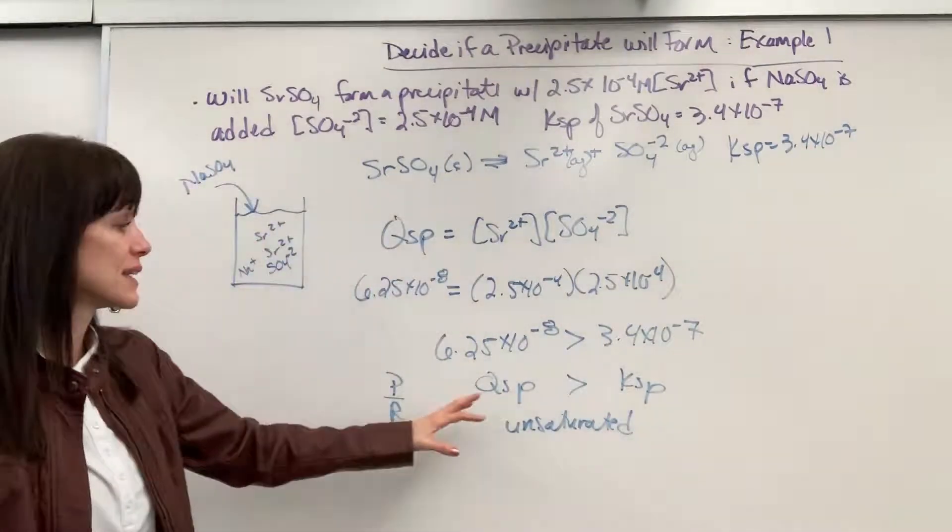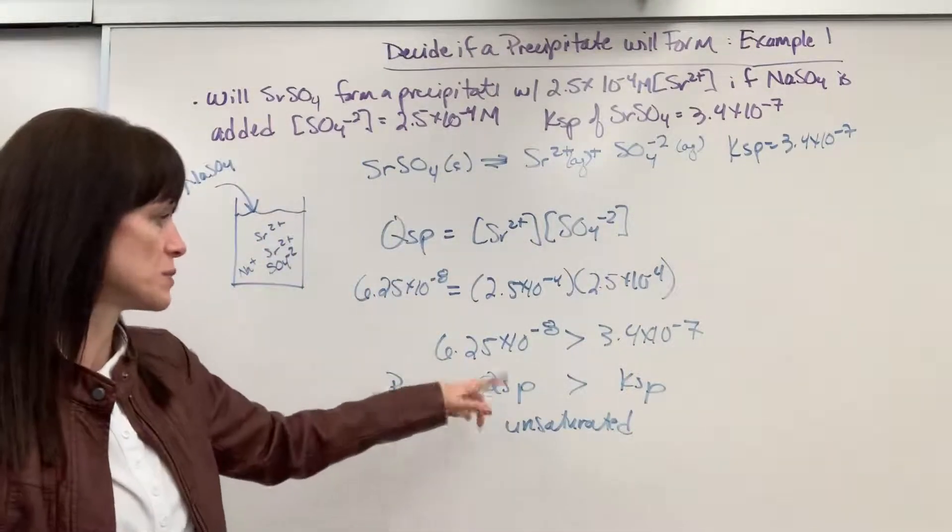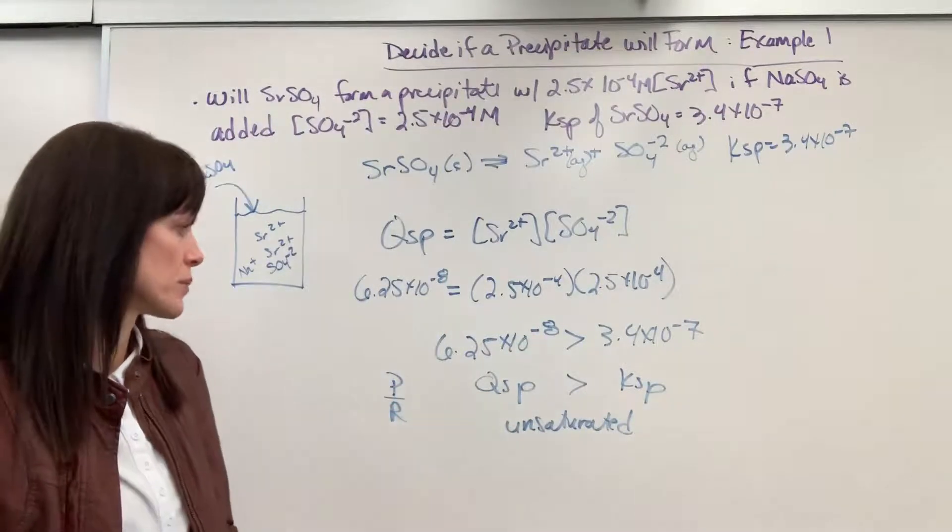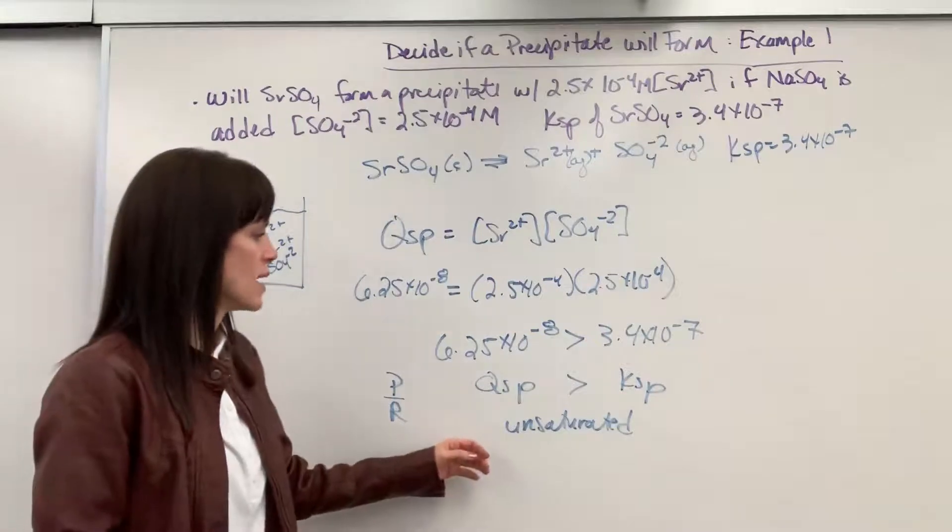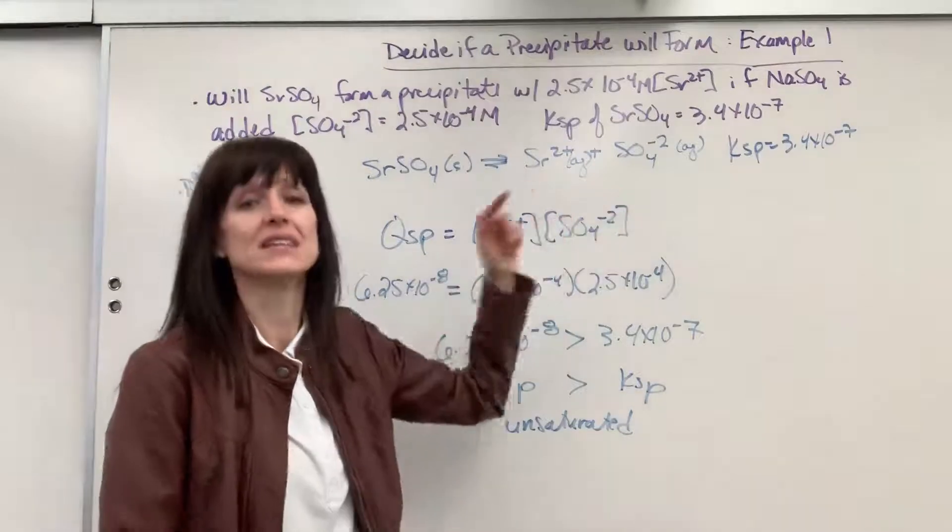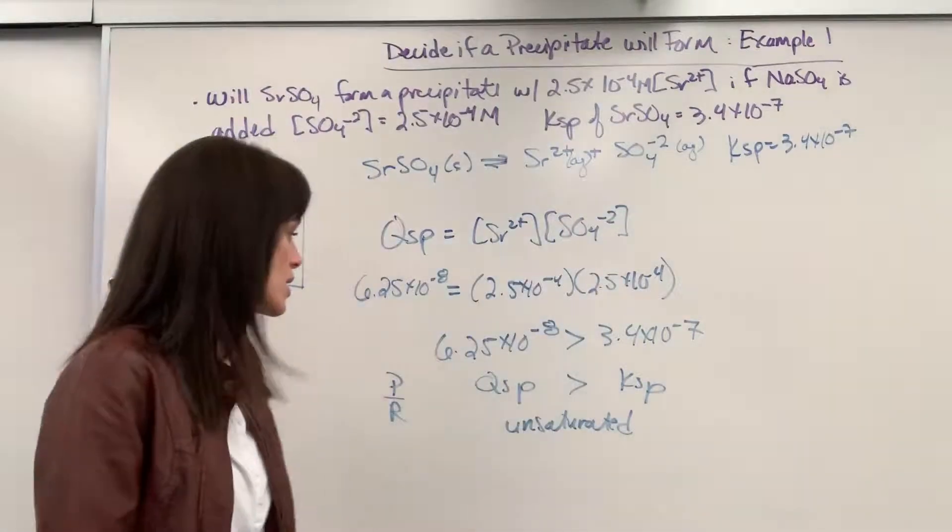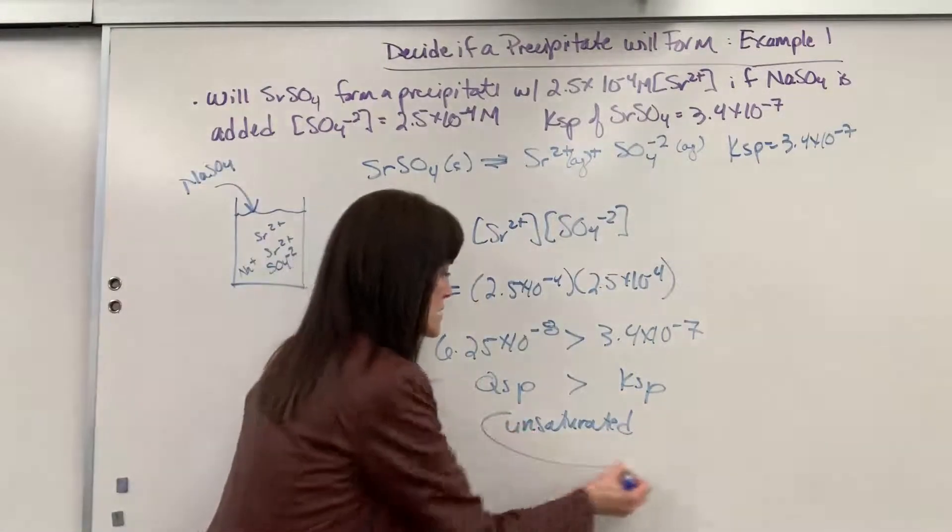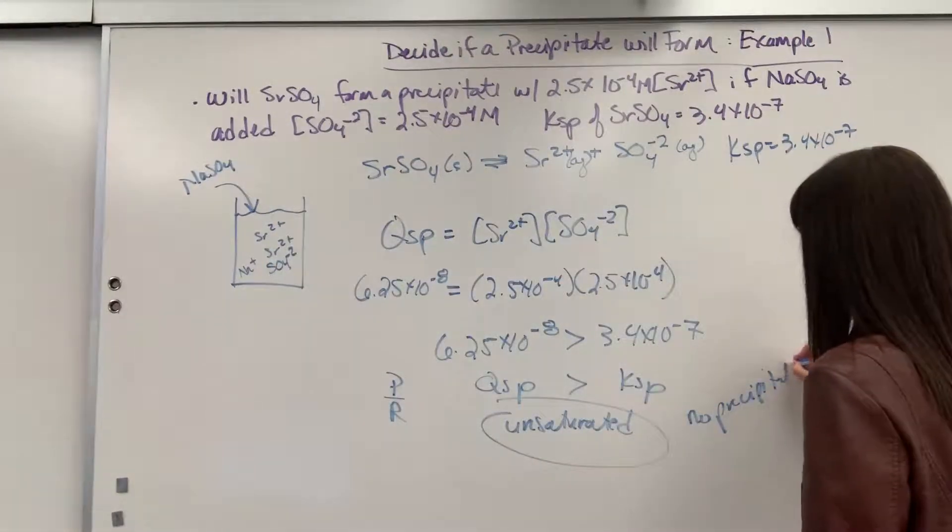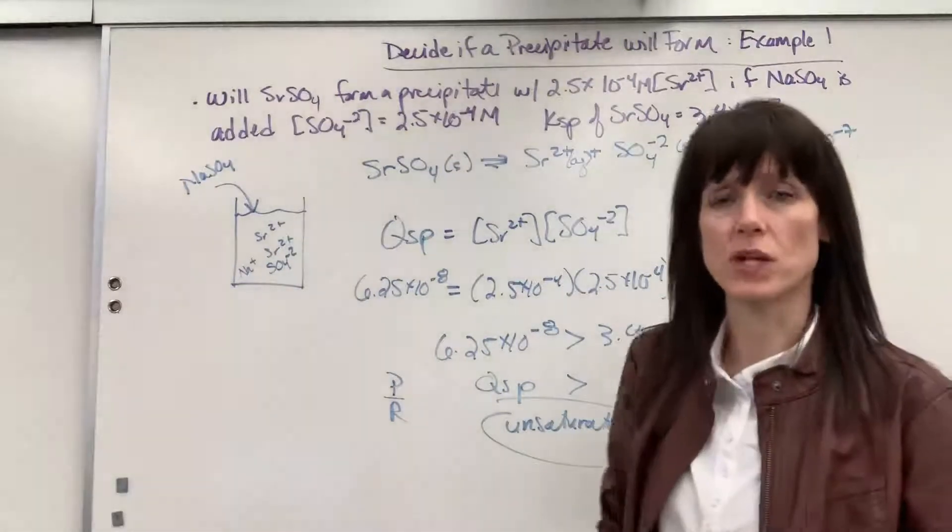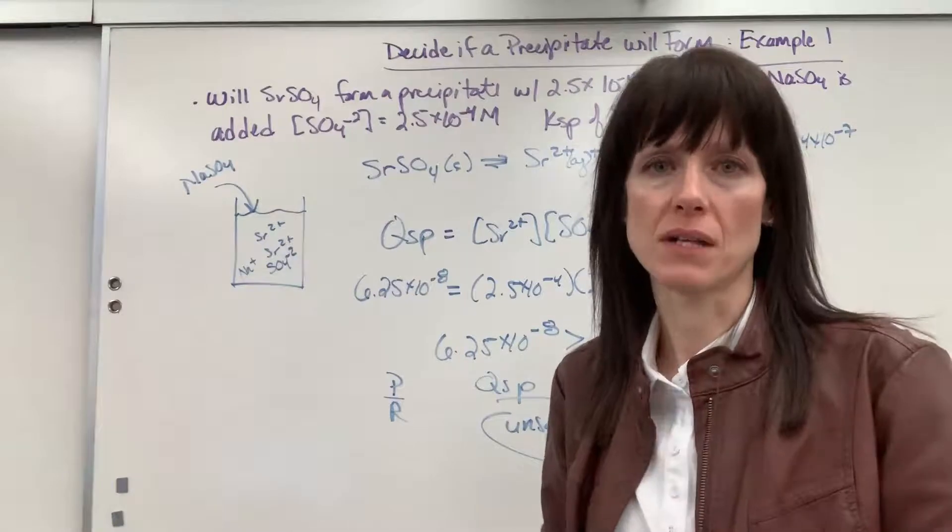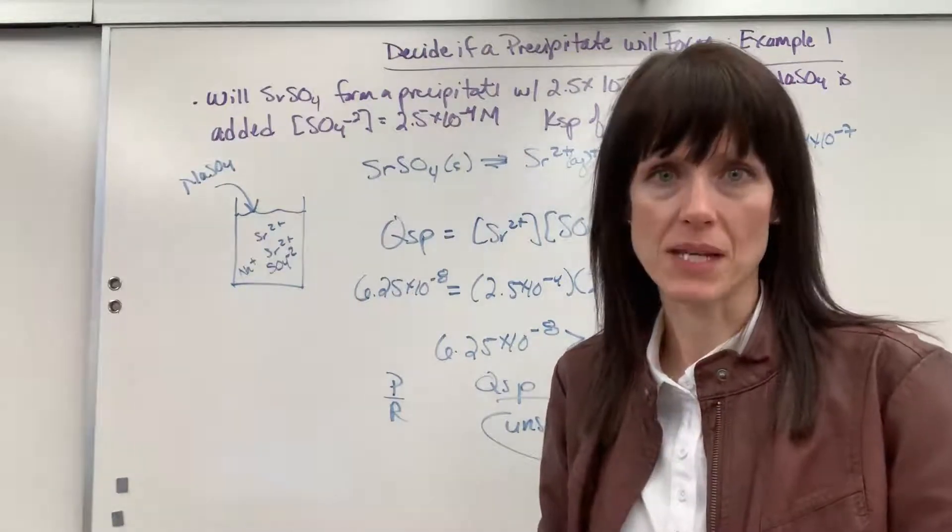This is unsaturated. And again, I have a full discussion on Qsp compared to Ksp, saturated, unsaturated equilibrium. Watch that video on the solubility playlist. But because Qsp is less than Ksp, it means I can dissolve more. This is an unsaturated solution. So, there's my answer. Unsaturated, no precipitate. It means we can actually dissolve more. And sometimes that's how the question will be asked. It will say, is this at equilibrium? If it's not, can more be dissolved? Or will something precipitate?